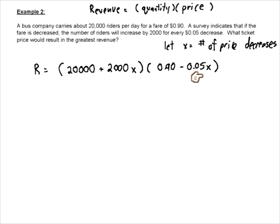We have 90 cents, and we're going to minus 5 cents. Now we don't know how many of these price decreases we have. That's the question here. So this is the toughest part of the question, trying to establish that equation for revenue. Now once we have the equation, now it's just math.